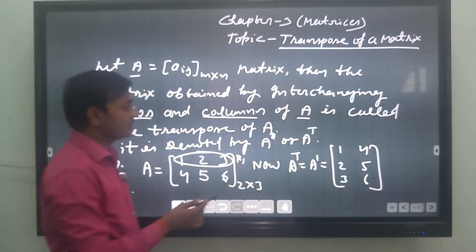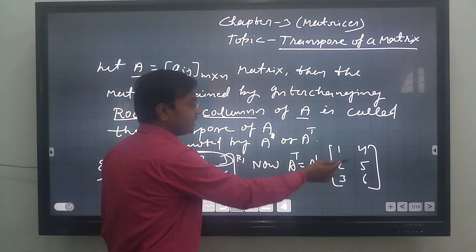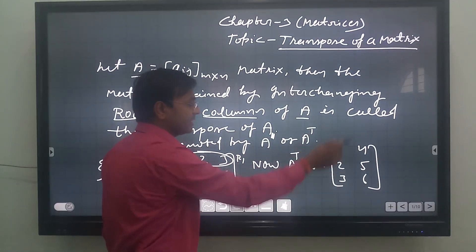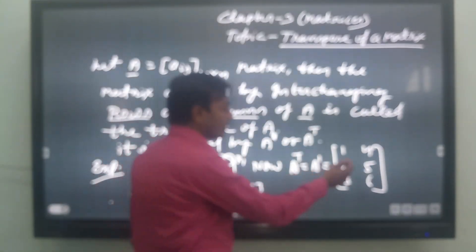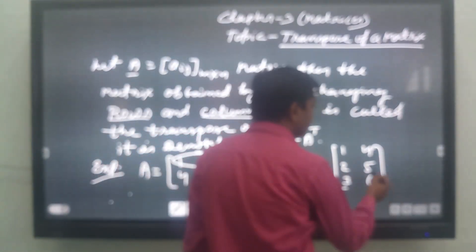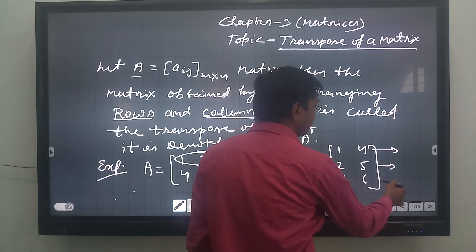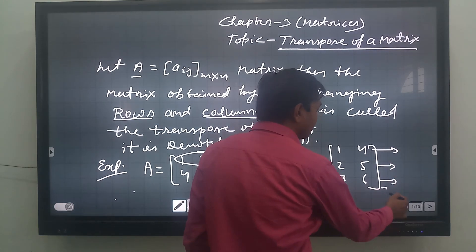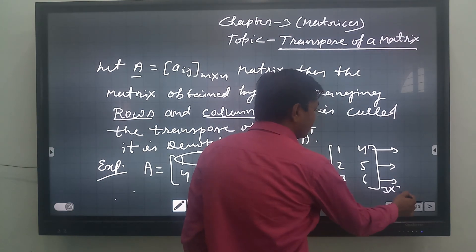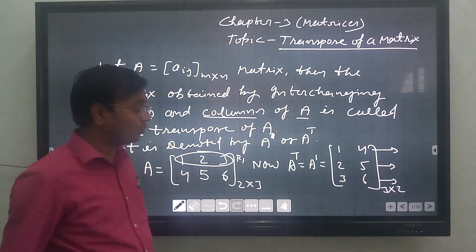So A dash equals: first column 1, 2, 3 and second column 4, 5, 6. Now let us find the order of this matrix — it has 3 rows and 2 columns, so the order is 3×2.